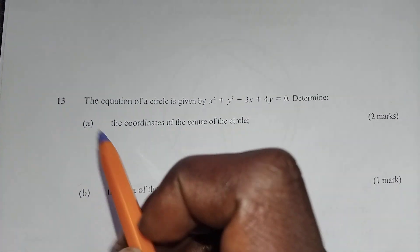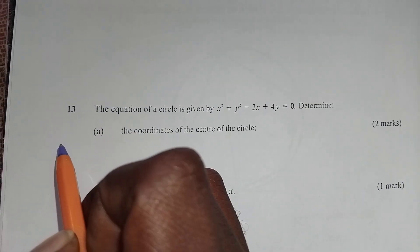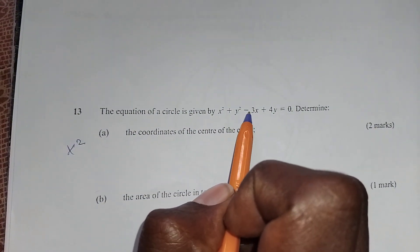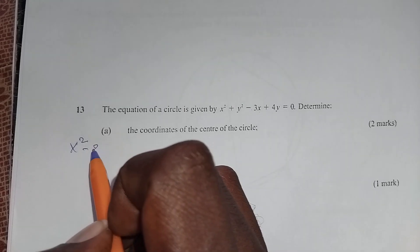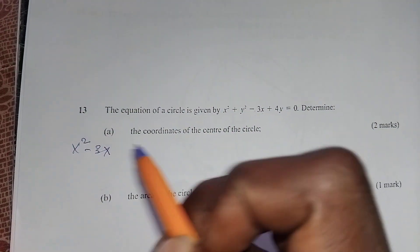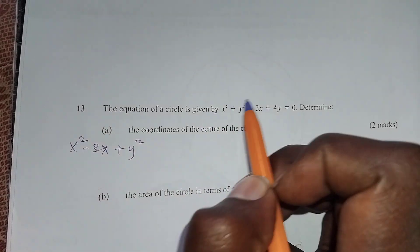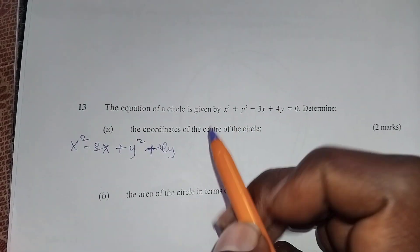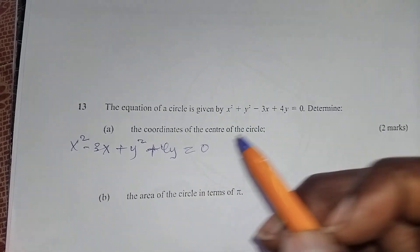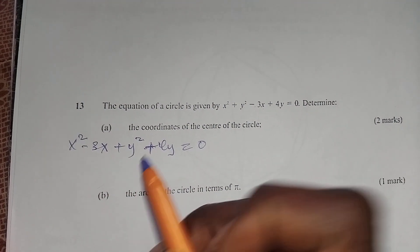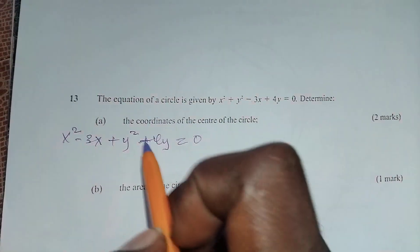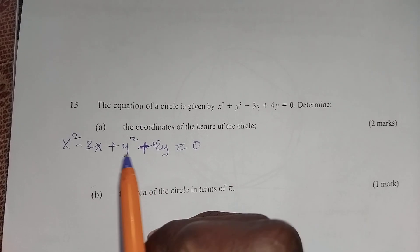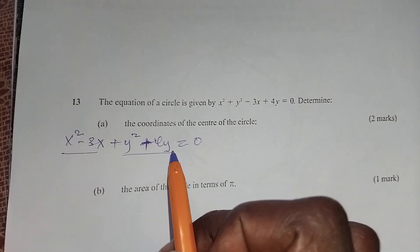So we rearrange to get x squared minus 3x plus y squared plus 4y equals to 0. Here we don't have the constant term, so we complete the square for the x part and also for the y part.